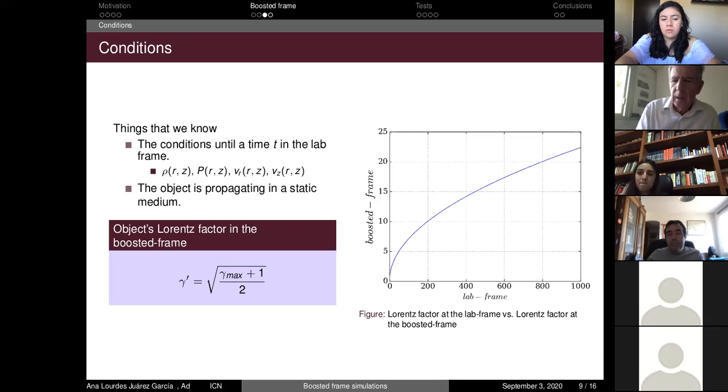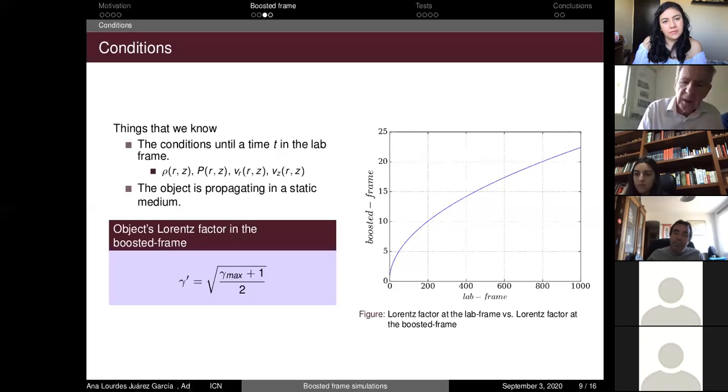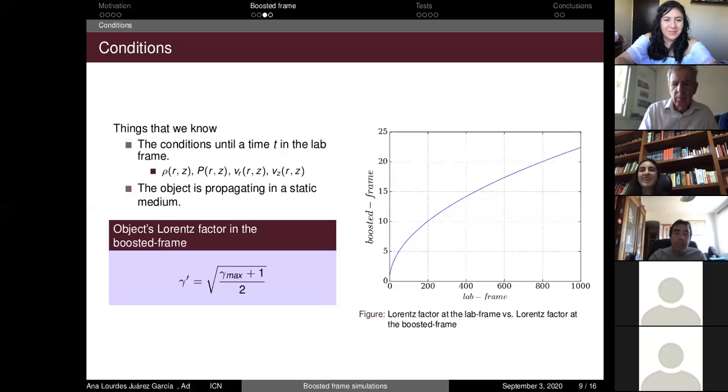So I see no other question, so maybe I will ask my question. It's very naive. I'm not sure I understand completely what is analytical and what is numerical in this model. So I understand that you do numerical simulation, but the change of frame, is it completely analytical or is it numerical also? Well, it's analytical to change between systems. We only use the Lorentz transformations, but the idea is to solve all the evolution of the fluid inside of the boosted frame and then pass it to the lab frame.